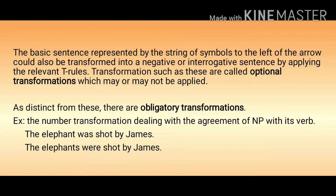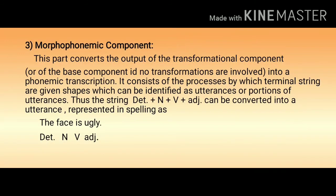The basic sentence could also be transformed into a negative or interrogative sentence by applying the relevant T-rules. Transformations such as these are called optional transformations, which may or may not be applied. As distinct from these, there are obligatory transformations — for example, the number transformation dealing with the agreement of an NP with its verb: 'The elephant was shot by James' becomes 'The elephants were shot by James.'